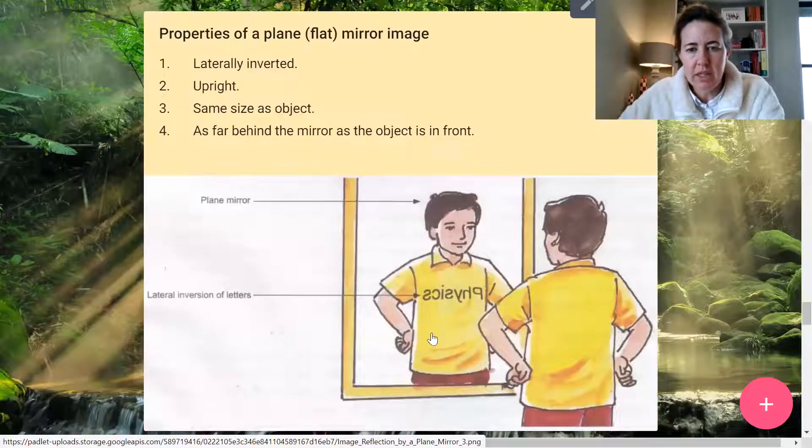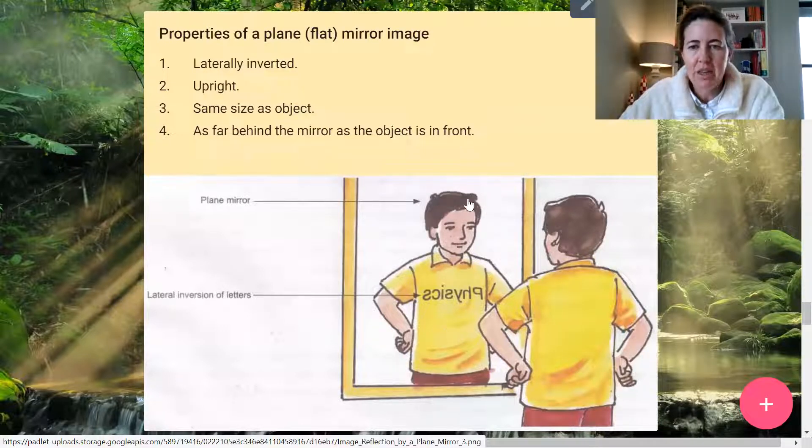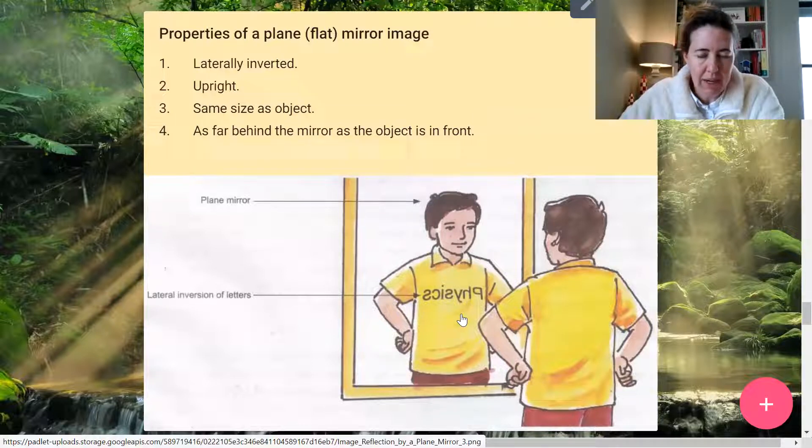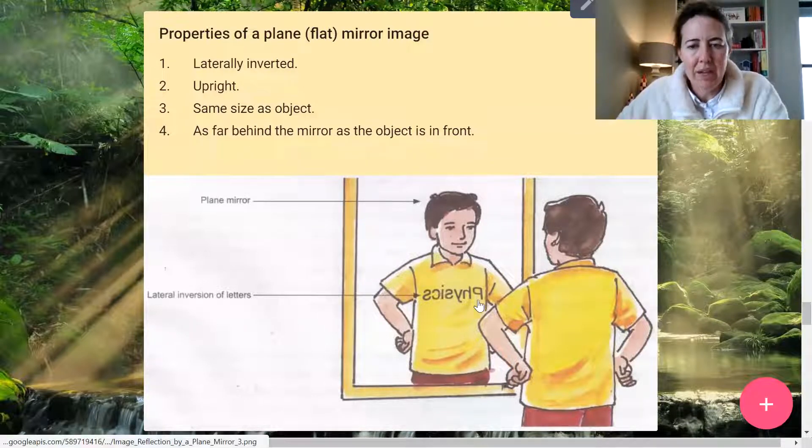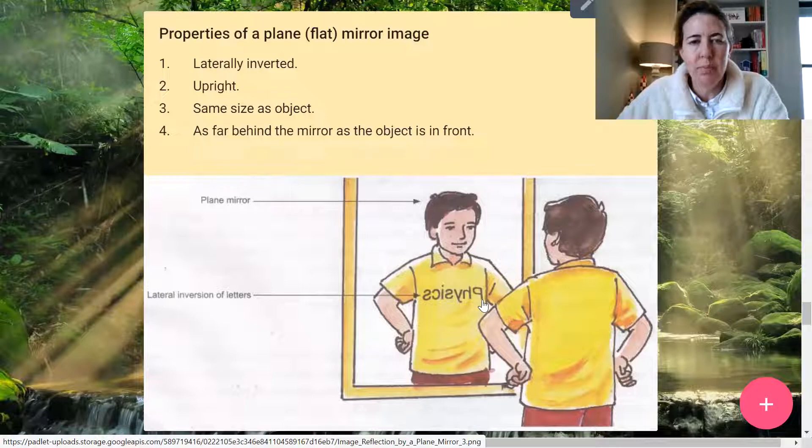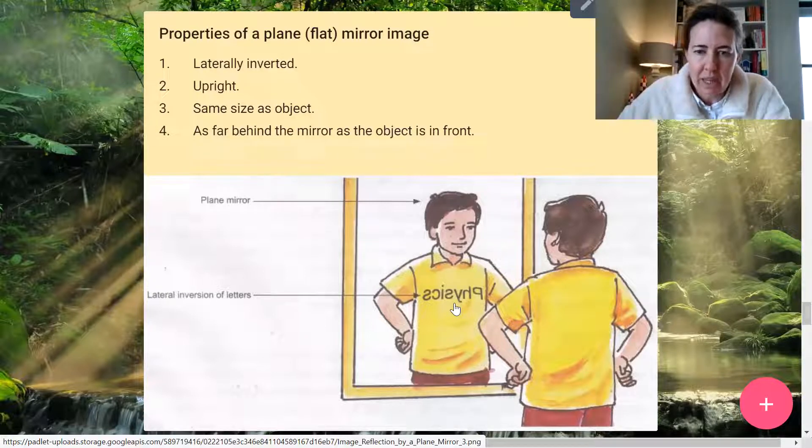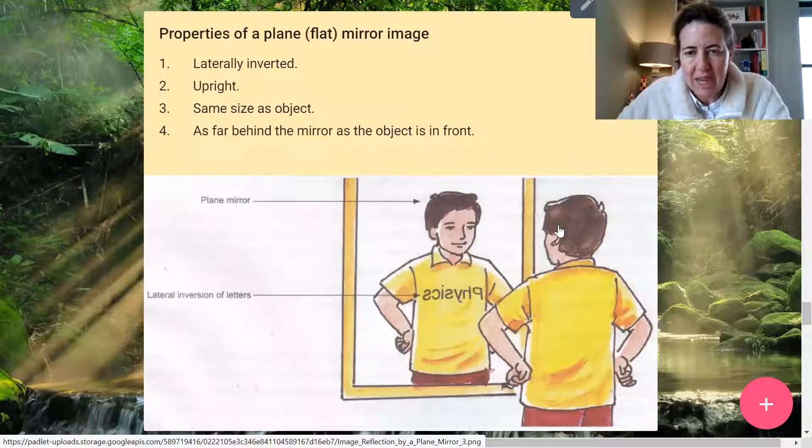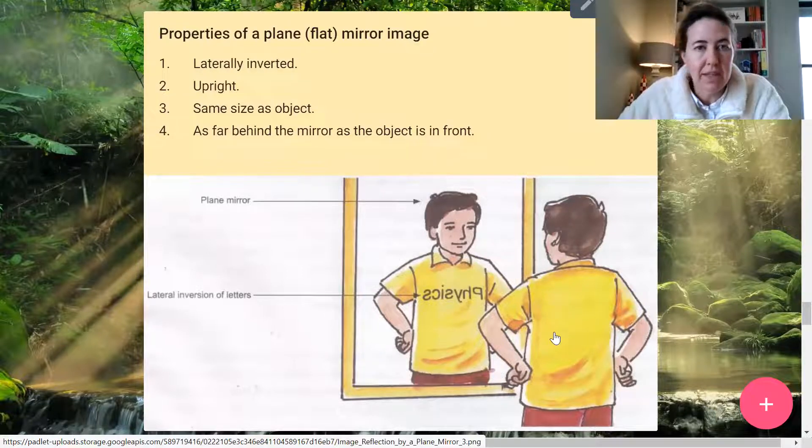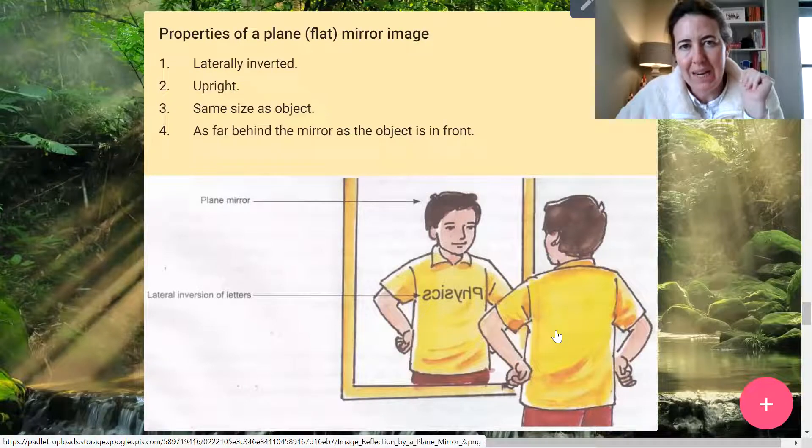Now, if we look at reflection on smooth surfaces, then we look typically at a mirror. And this is what you should know about the image in the mirror. Number one, everything will be laterally inverted. That means if you have something written on your T-shirt, that it will all be inverted left to right. So instead of this reading left to right physics, it now reads right to left. Each letter has been left to right, meaning laterally inverted. The image is still upright. It's the same size as the object, but the image is as far behind in the mirror as the object is in front of the mirror. And these are the four properties of a plain mirror image.